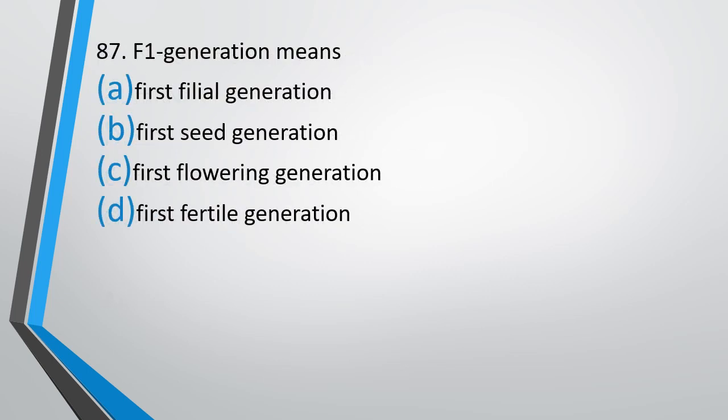Question number 87. F1 generation means first filial generation, first seed generation, first flowering generation, or first fertile generation. The correct answer is option A, first filial generation.